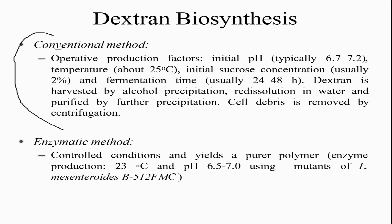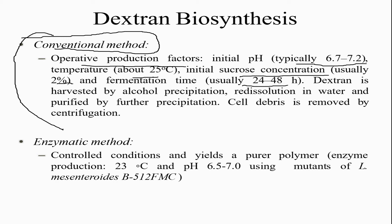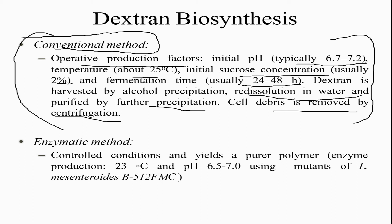For the conventional dextran biosynthesis method, the operative production parameters are: pH around 6 to 7, temperature around 25 degrees Celsius, initial sucrose concentration of about 2%, and fermentation time of 24 to 48 hours. Dextran is harvested by alcohol precipitation, similar to xanthan, followed by re-dissolution in water, further precipitation for purification, and cell debris removal by centrifugation.